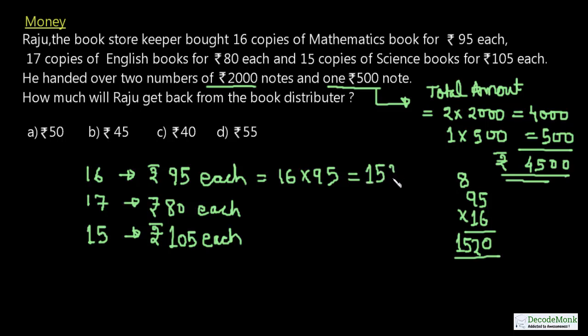For English books, 17×80: 17×0 = 0, and 17×8 = 136, giving us ₹1360.